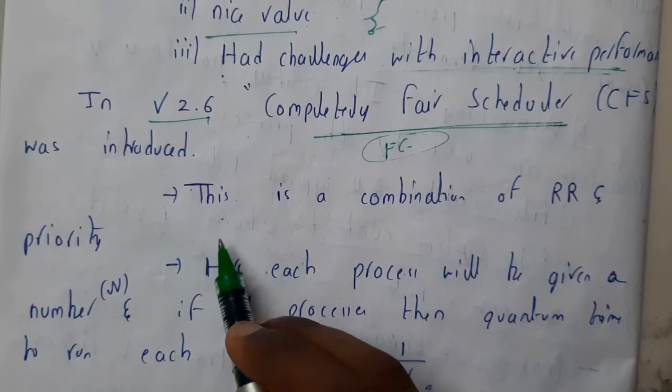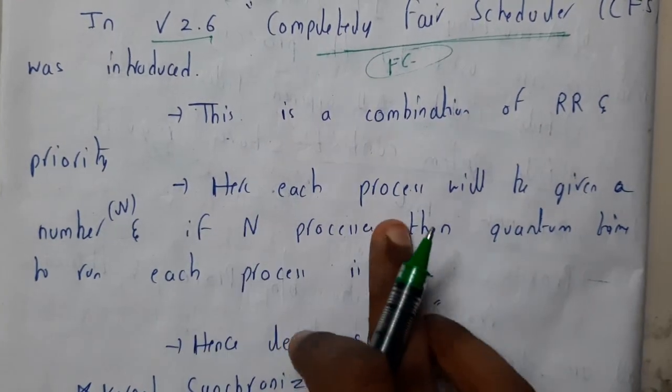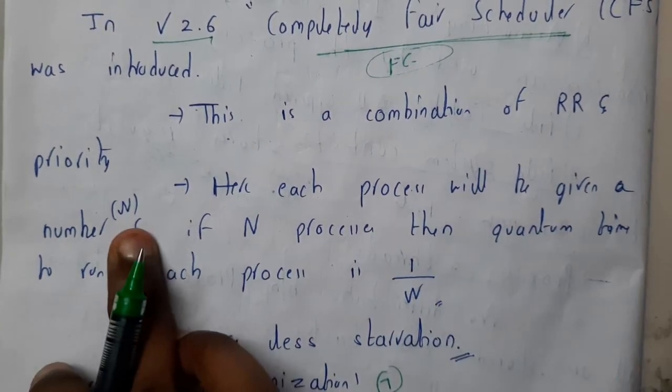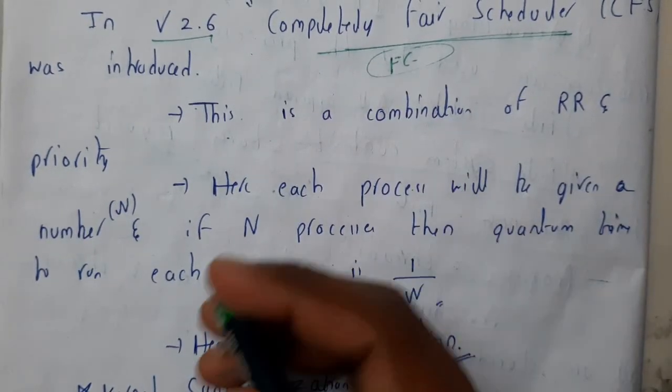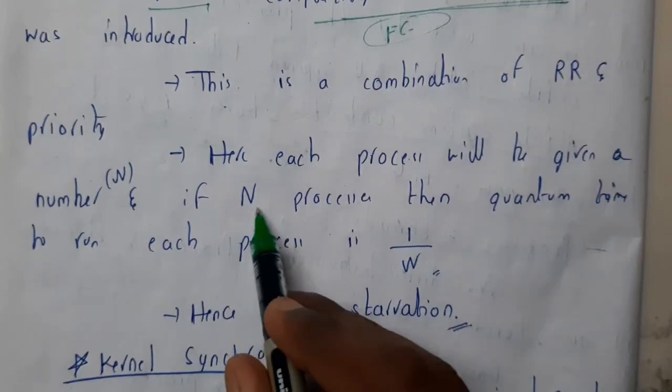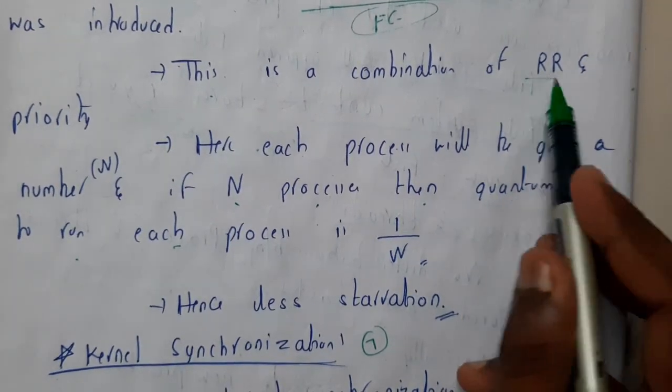Here, each process will be given a number N. Process 1, 2, 3, 4, 5, 6, 7, 8, 9, 10, 11, 12, 13, 14. So let us assume 14 processes. Then the quantum time for each process, I hope everyone knows about round robin.